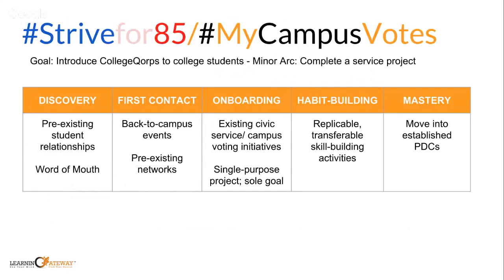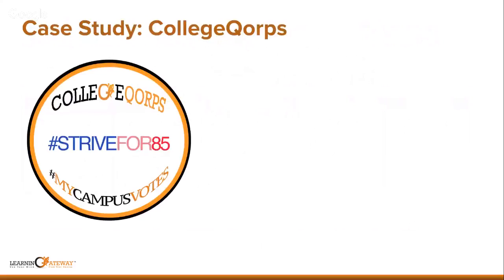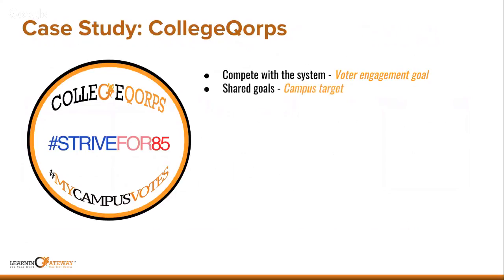The broader purpose is that by walking our first users through College Corps with a very specific set of tasks and steps, they're practicing replicable, transferable skill-building activities. Once the midterm campaign concludes in November, they'll be positioned to apply those same skills to other service projects that can help them build a career. Tying this to our seven rules: competing with the system means everyone shares one goal — 85% eligible voter turnout for their campus.